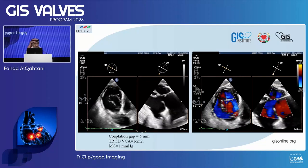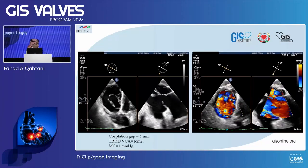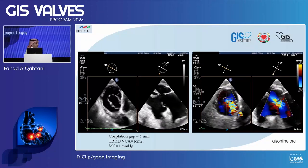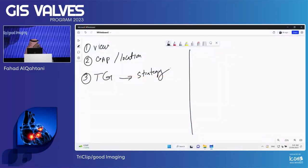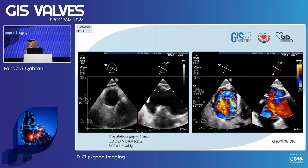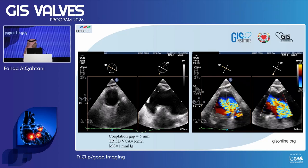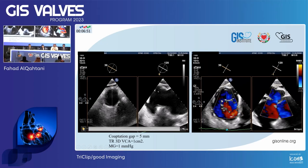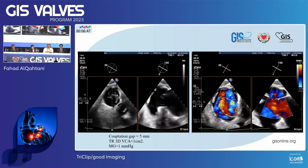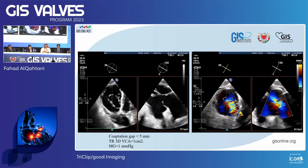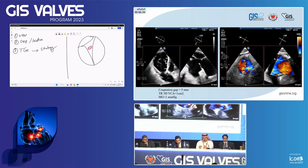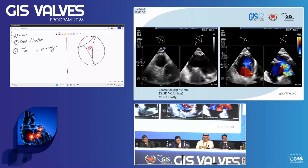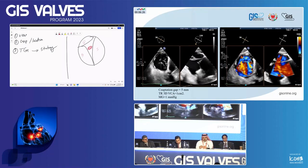I will stop here and discuss with the panelists based on the images presented. What do you think is the best strategy to treat this TR? From the anatomical point of view, there are three leaflets — septal, anterior, and a very small posterior — behaving like a two-leaflet valve. The jet is almost involving the whole tricuspid valve: a wide gap extending from the anterior-septal commissure to the posterior-septal commissure, so it's a wide gap and a big jet.